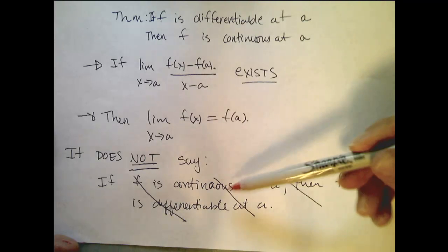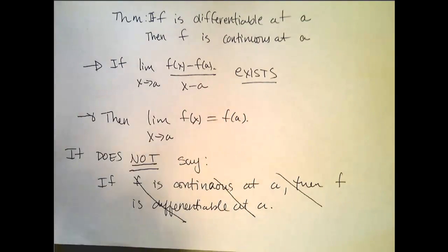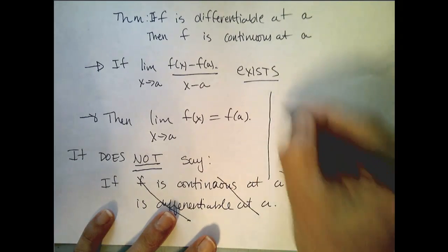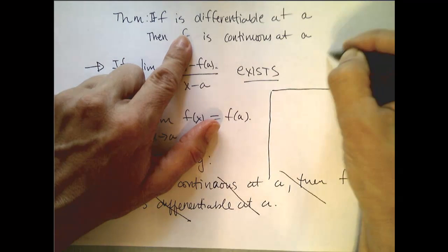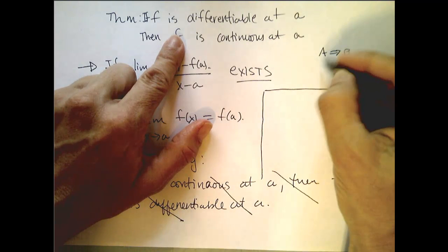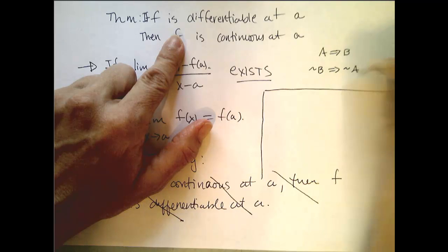It didn't say that if f was continuous at a, then f is differentiable at a. It doesn't say that. However, it does say something else. So a implies b, if you've ever seen any logic, tells us that not b implies not a.